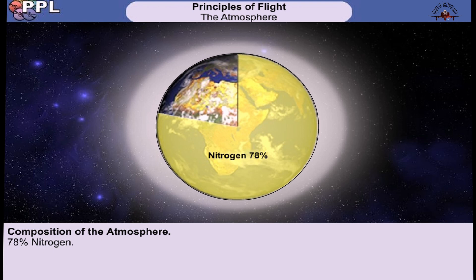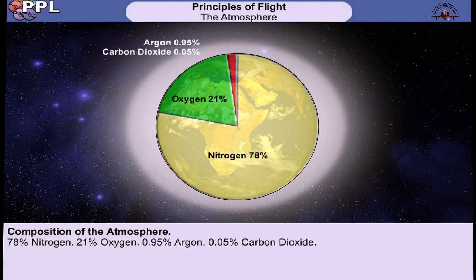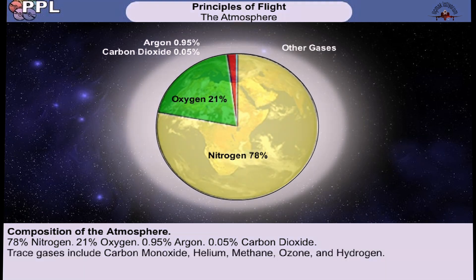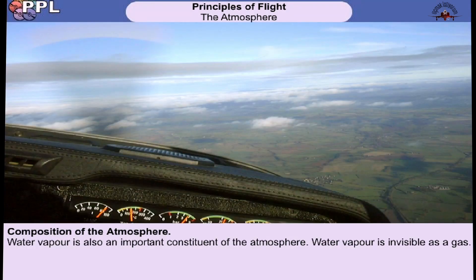By far the most common gas is nitrogen, which accounts for about 78 percent of the atmosphere. Oxygen makes up 21 percent of the atmosphere. Oxygen is essential to sustaining life and is required to allow the combustion of fuel to take place in aircraft engines. Just less than one percent of the atmosphere is argon, with carbon dioxide making up most of the remainder. Many more gases make up the remainder but are found in such small quantities that we regard them as trace gases, including carbon monoxide, helium, methane, ozone, and hydrogen.